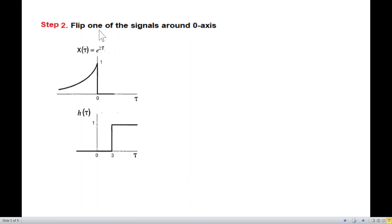The second step is that flip one of the signals around zero axis. We either flip this one or we flip this one. This is easier looking. So it is better that we flip this one. And moreover, it will come towards the left hand side and then it will be easy to do the multiplication. So we flip this signal. So this will now be called h minus tau. This was h tau. This will be h minus tau. Now x tau remains same. No change. So that is second step.